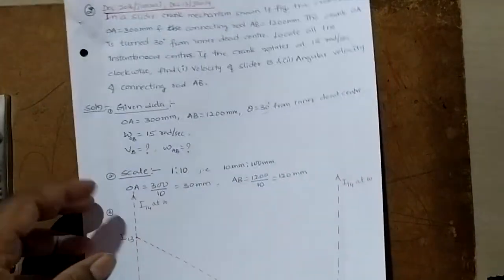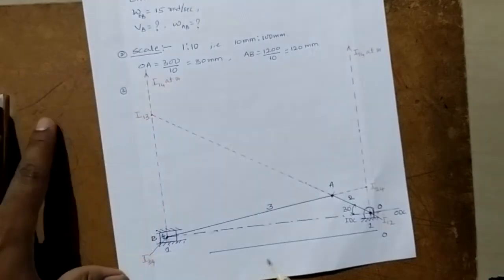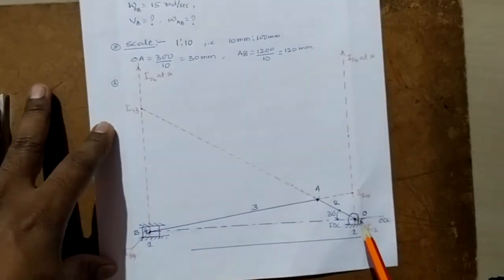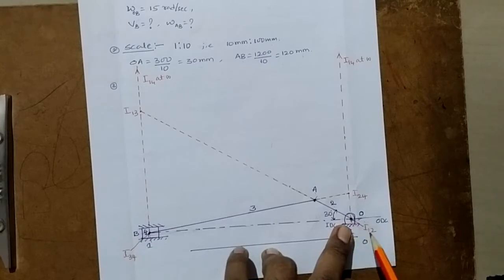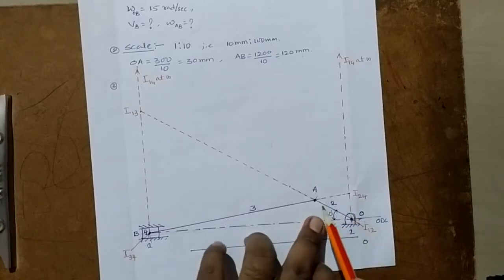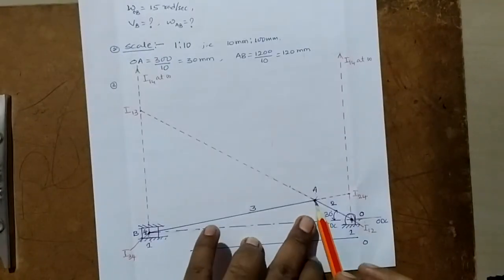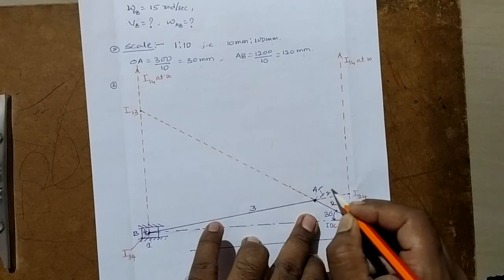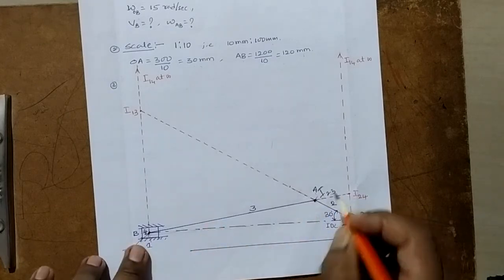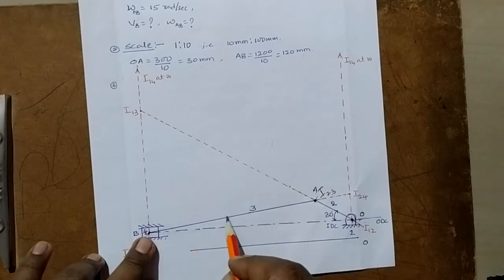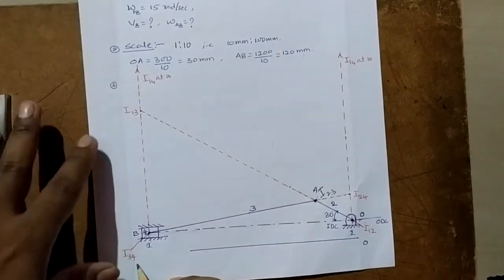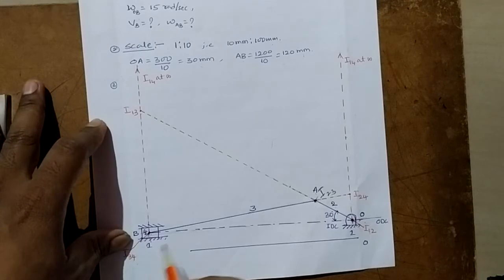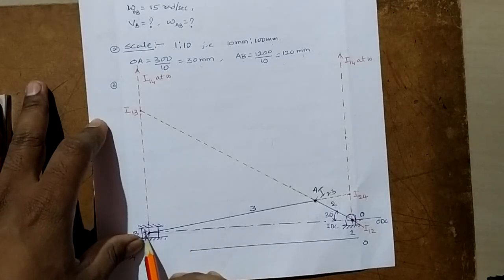We can locate the fixed and permanent instantaneous centers by inspection. Link number 1 and link number 2 intersect here — this is the fixed instantaneous center I12. Link number 2 and link number 3 intersect here — this is I23. Here is the instantaneous center for link 3 and slider link 4 — this is I34. For the instantaneous center of the fixed link 1 and slider link 4, since the slider moves horizontally, we get the instantaneous center perpendicular to the motion of the slider.